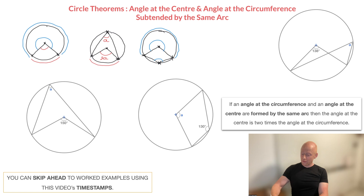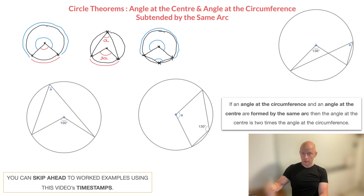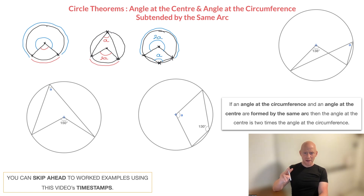This angle at the circumference and this angle at the center are both being subtended or formed by the same arc. Consequently, we can use the theorem we just learnt to state that if the angle at the circumference is A, then the angle at the center must be 2A. That's the second setup.